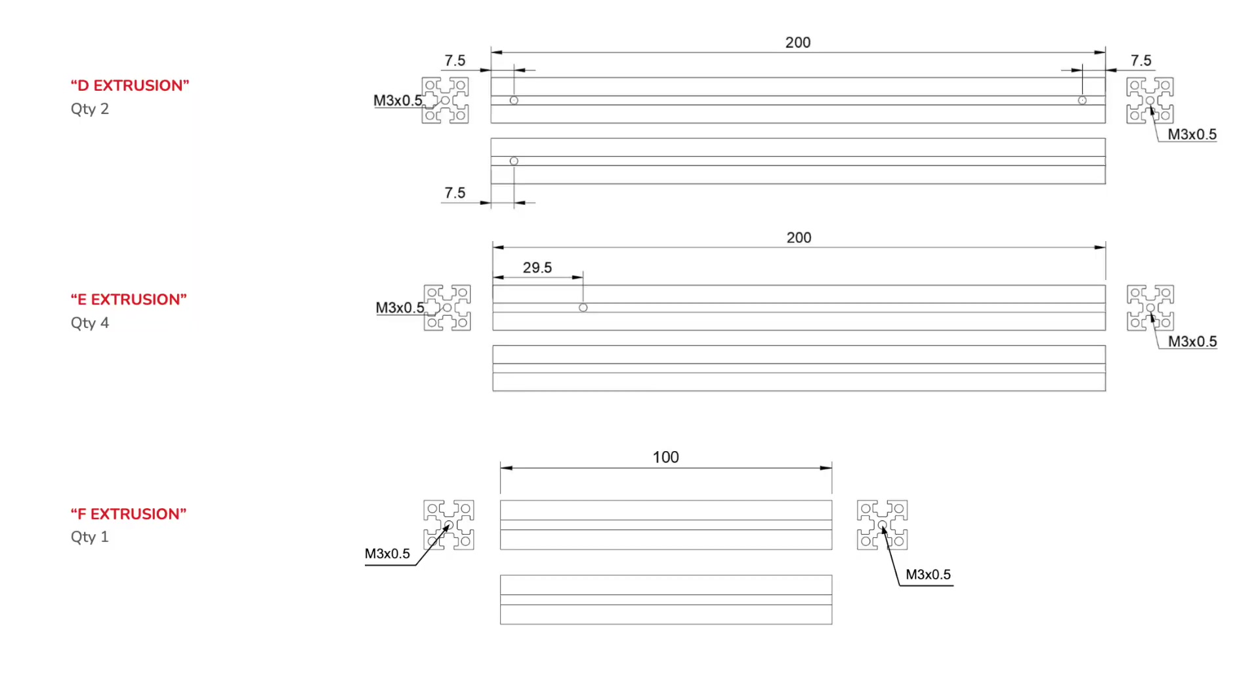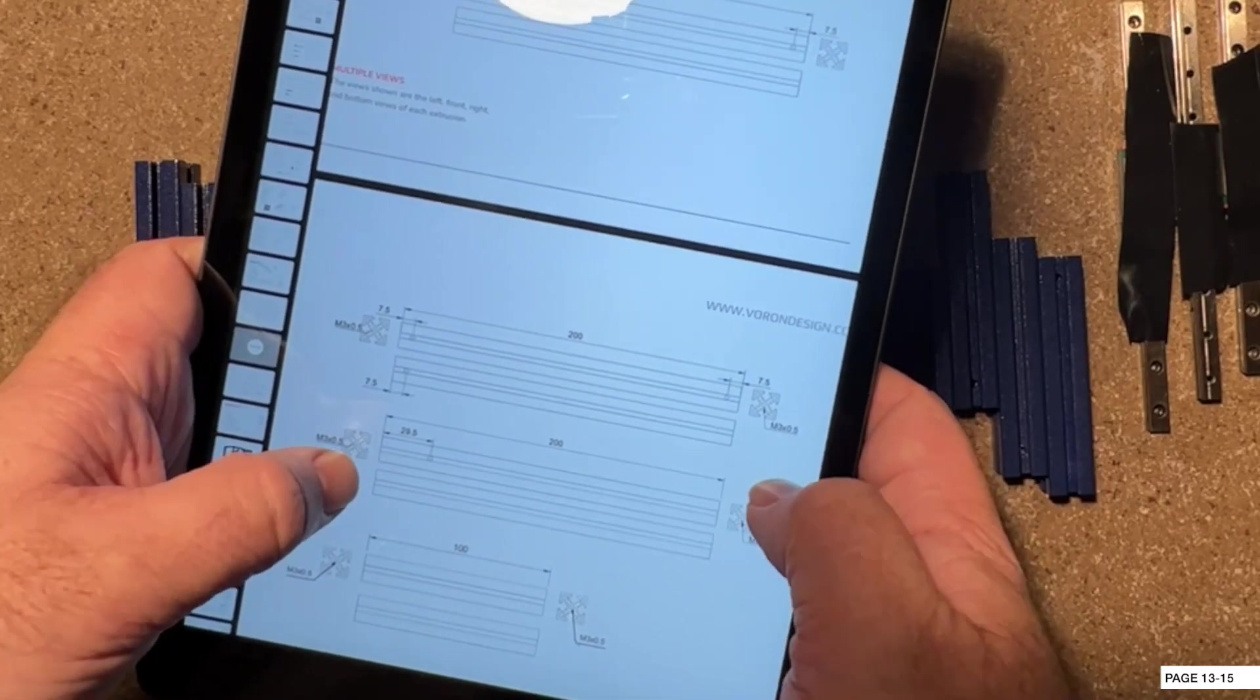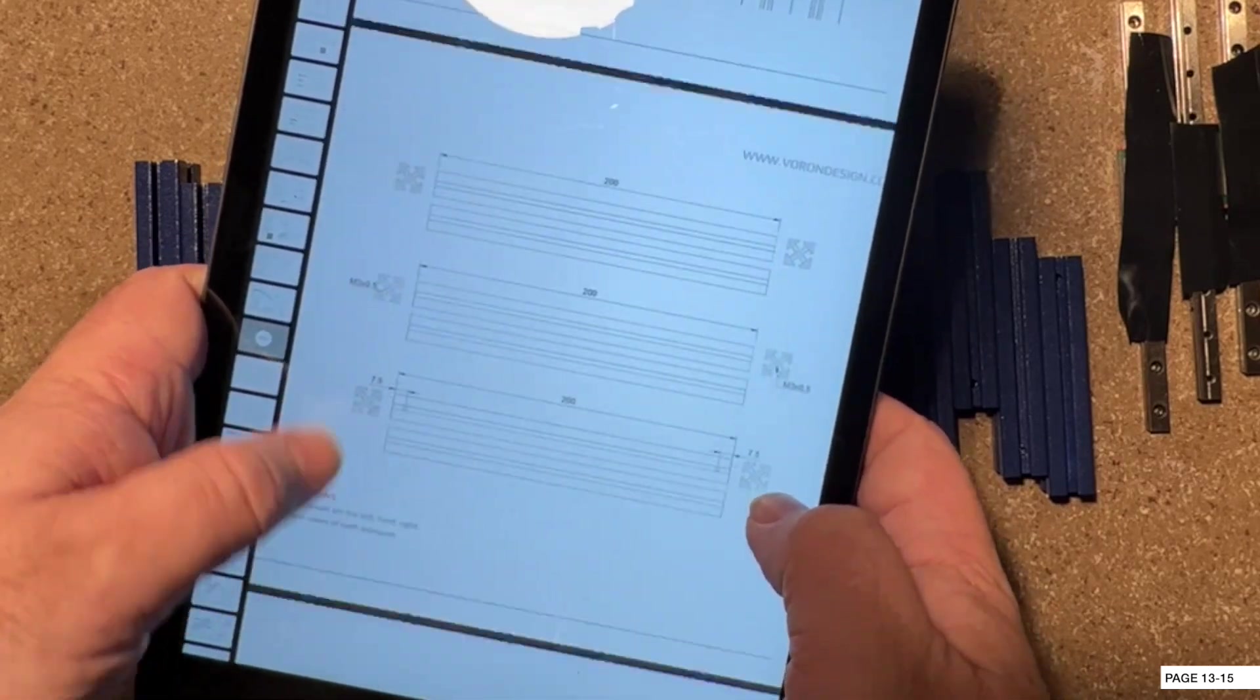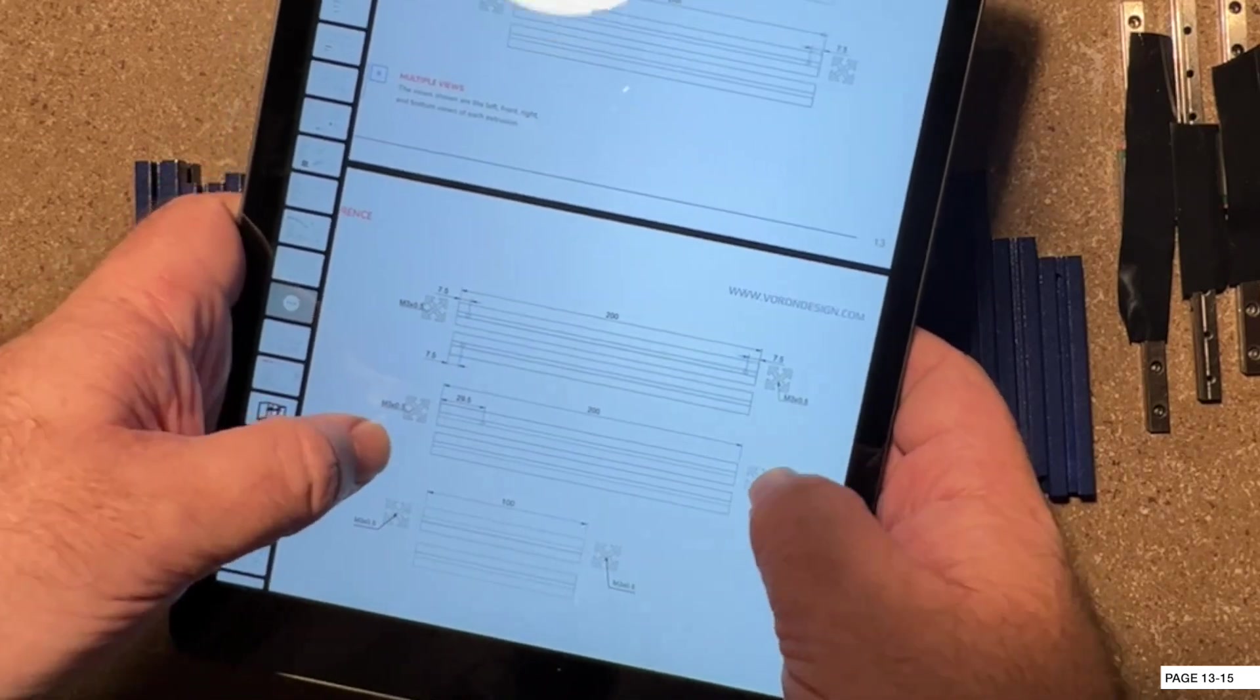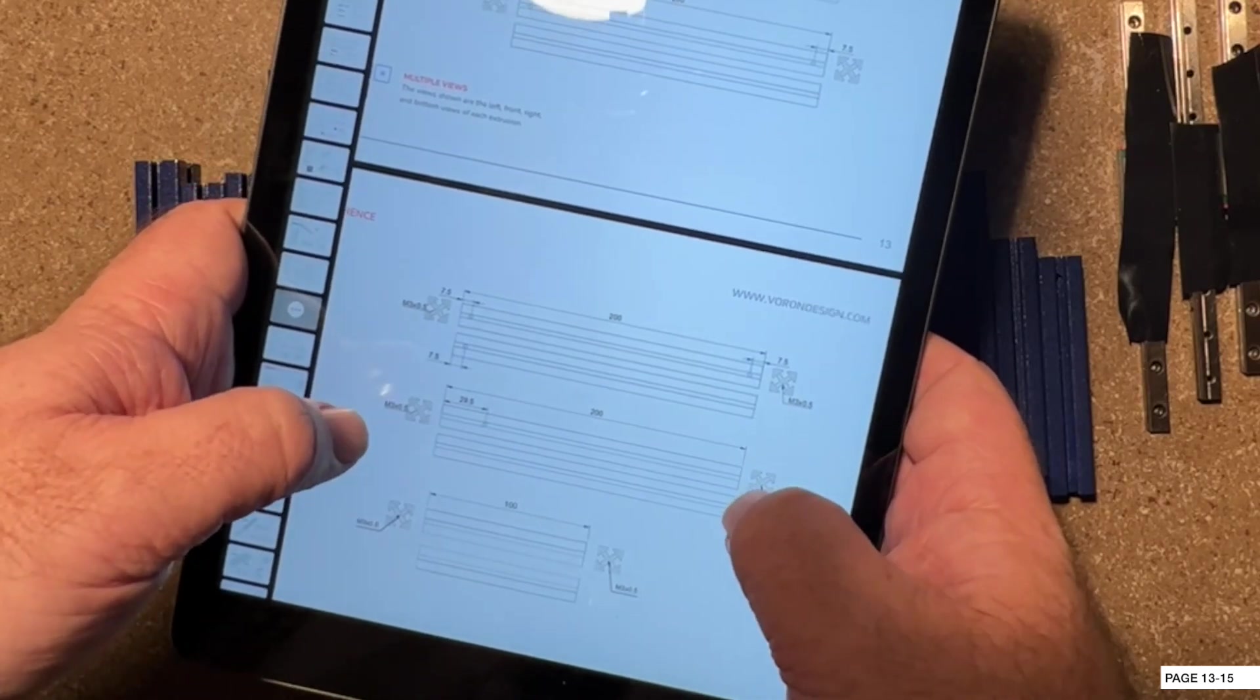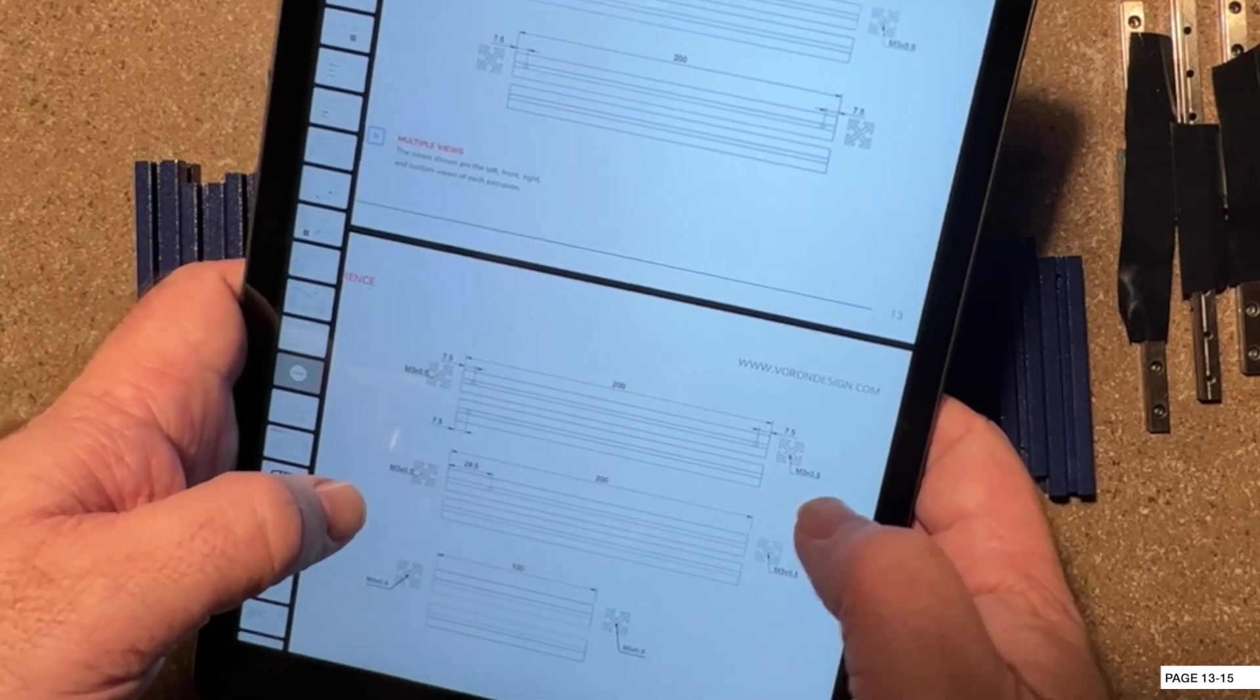If you look at the manual, it will call out the E-extrusion. These do have one hole, just the one that I showed. The problem is there's also other extrusions that might look a lot like that but might have two holes instead. You got to be really careful because the worst thing that can happen is you can be building your Voron and realize you used the wrong extrusion and then you got to go back and undo work.